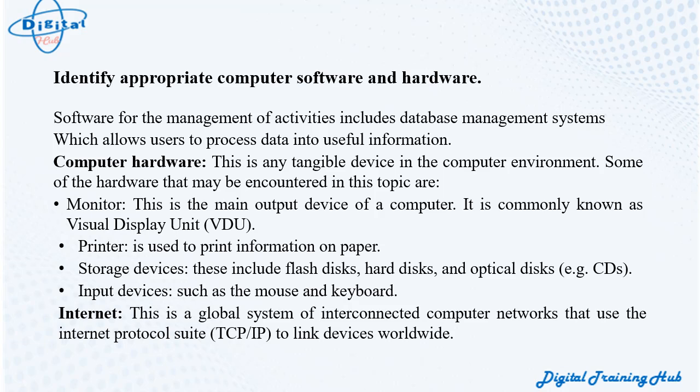Computer hardware is any tangible device in the computer environment. Hardware examples include: Monitor — the main output device, commonly known as Visual Display Unit (VDU); Printer — used to print information on paper; Storage devices — including flash disks, hard disks, and optical disks such as CDs.